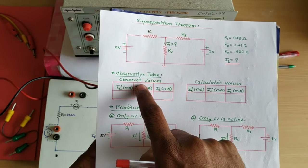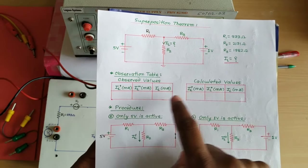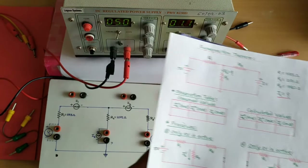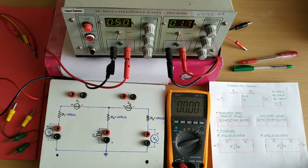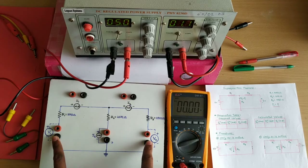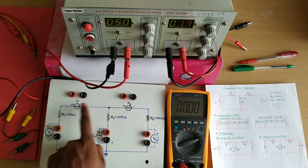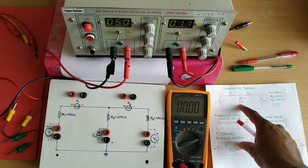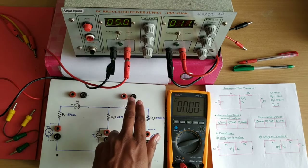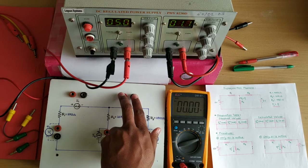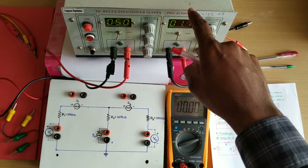The observed values should match the calculated values — if they do, the superposition theorem is verified. Connections are made as per the circuit diagram. You only need to connect external power supplies V1 and V2. There is provision for three ammeters, but we only measure current through R2, the middle resistance. I1 and I3 ammeters are not used, so those terminals are shorted.